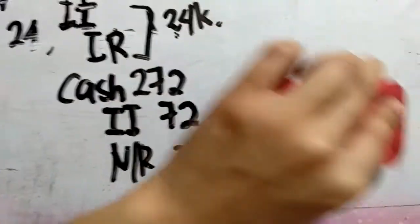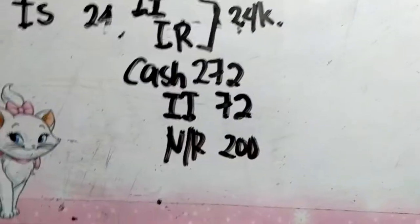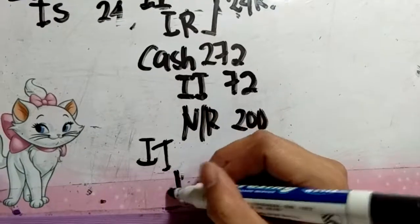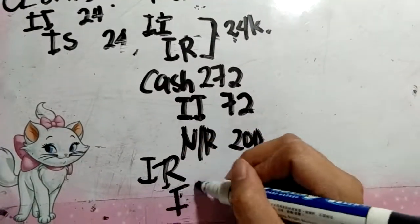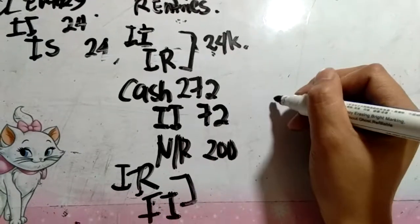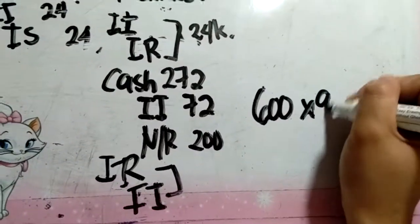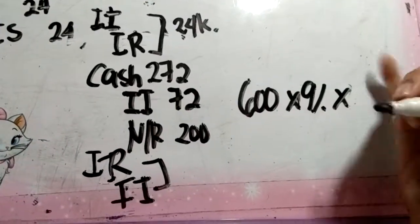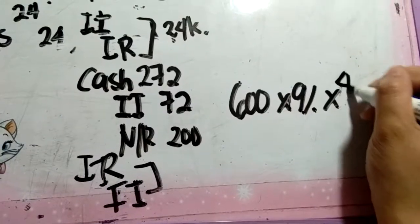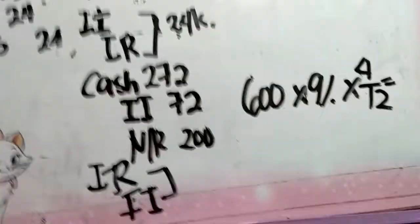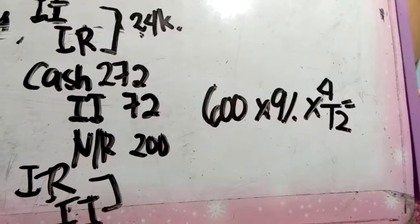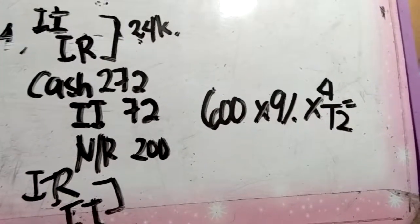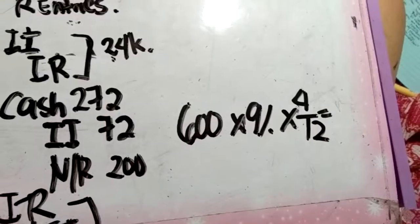From August 30 we still have to recognize interest income at the end of the year. So we do: Interest Receivable, Interest Income. But now the principal is no longer 800,000 — it's 600,000 since 200k was collected. So 600,000 times 9% times 4 over 12 (September, October, November, December). Using the calculator: 600 times 9% times 4 over 12.